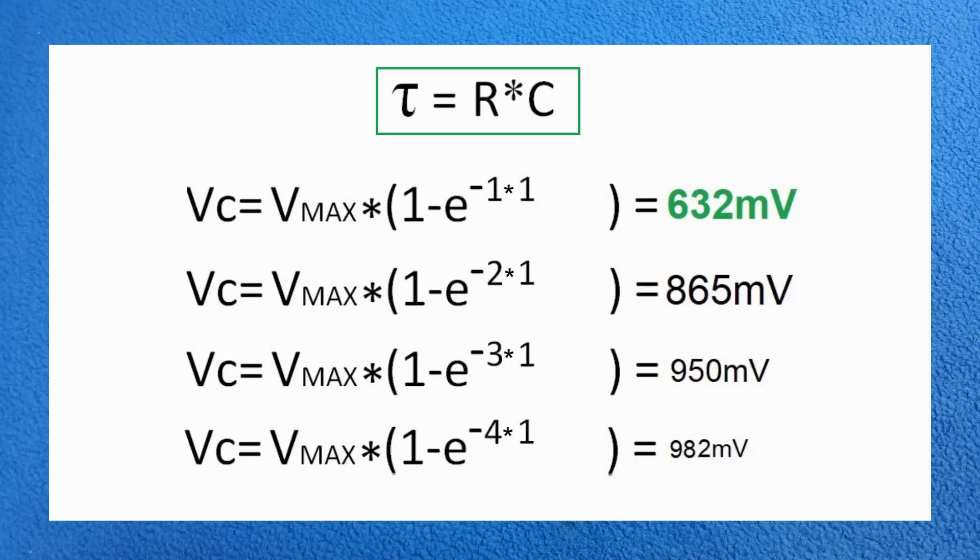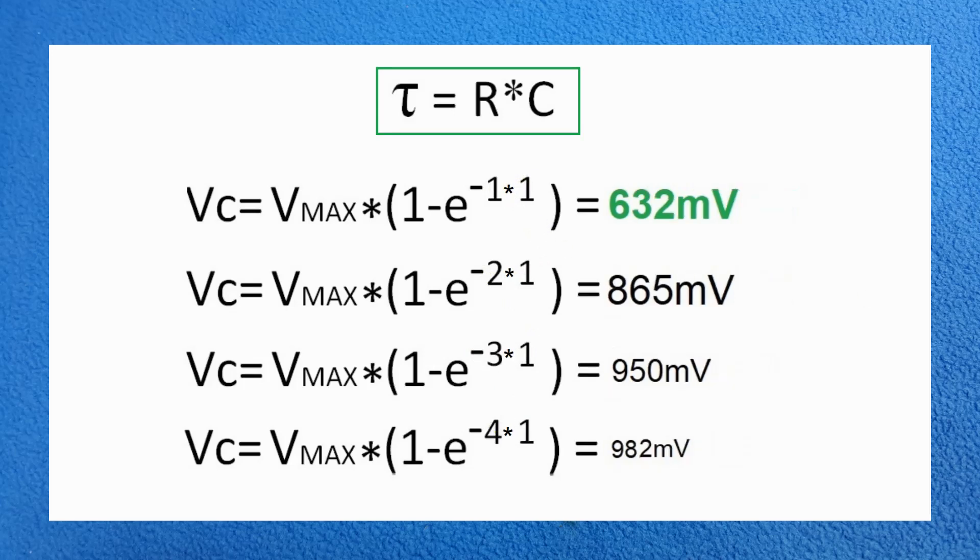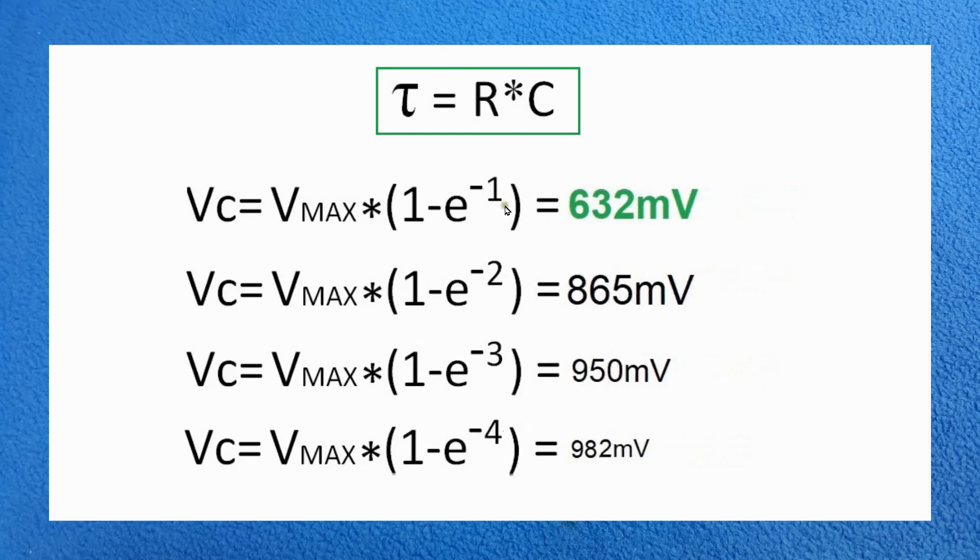All this game is as easy as learning to say one times one equals one. The voltage in the capacitor equals the maximum voltage times one minus the logarithm of minus one. Let's compact the formula now. It's very simple: the voltage equals VMAX times one minus the logarithm to the power of one, two, three, four.